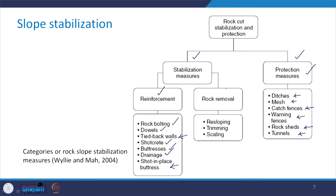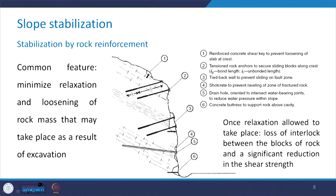Before that, the other method which can be used for stabilization is rock removal, which includes resloping, trimming, or scaling of the slope in order to make it more stable and achieve a larger value of the factor of safety. This figure shows some of the measures which can be adopted to reinforce the rock slope — let us discuss these measures one by one.